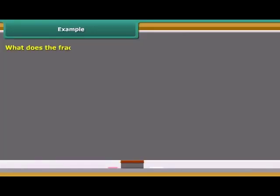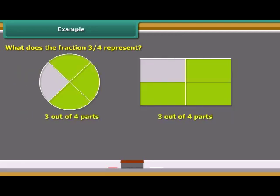What does the fraction 3 upon 4 represent? It represents three out of four parts. The shaded part of each figure below represents 3 upon 4 of the entire figure.